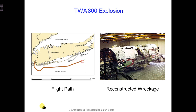In other words, investigators determined that the most likely source of the fuel tanks being ignited was a short circuit outside of the center wing fuel tank that allowed excessive voltage to enter it through electrical wiring associated with the fuel quantity indication system. That's a quote from the report released by the National Transportation Safety Board, which took over four years to be published.